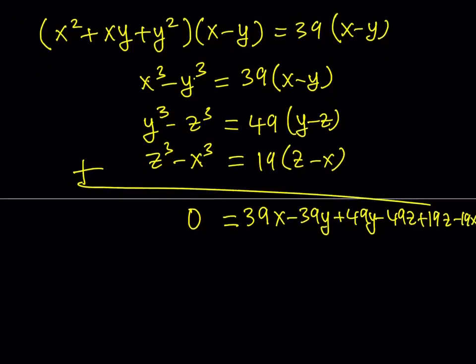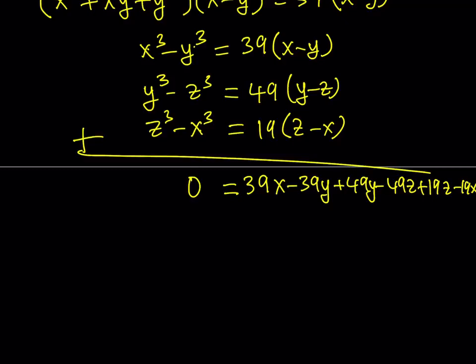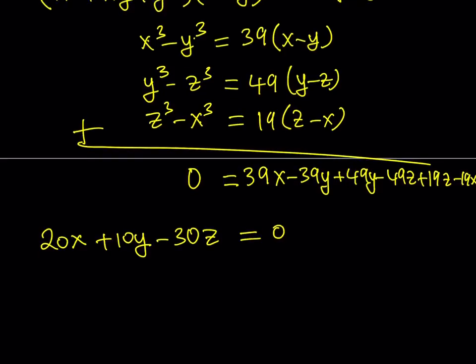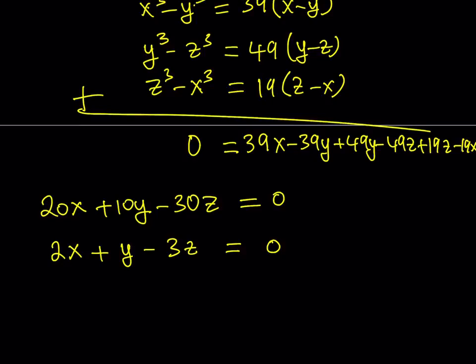Let's go ahead and simplify this. 39x minus 19x gives me 20x. Negative 39y plus 49y gives me 10y. And z is going to be negative 30z. This is equal to 0. We can divide both sides by 10 because they have a common factor, so we get 2x plus y minus 3z is equal to 0.